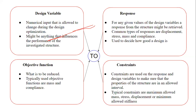Response is what you want to obtain from the optimization problem. Typical responses include displacement, stress, mass, and compliance (stiffness). In this project, only 50% of the total volume or mass is to be retained, so mass is used as the response. The objective function is to reduce the weight — typically, when weight is reduced, stiffness is also reduced. That is the objective function used here.